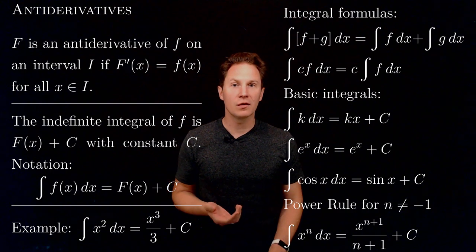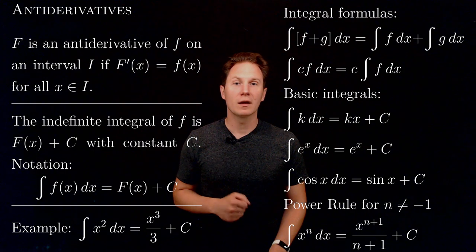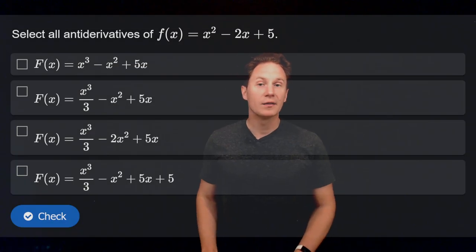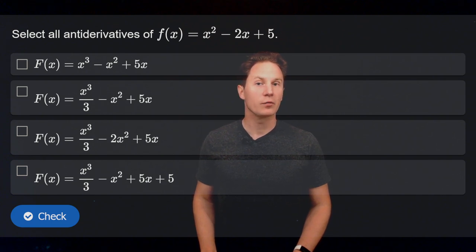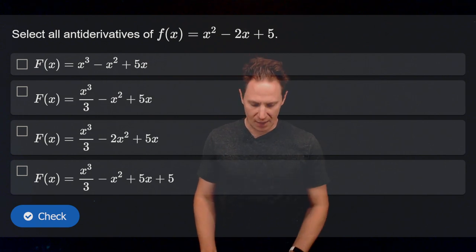Okay, this is enough for now — let's solve some problems involving antiderivatives. Select all antiderivatives of the function little f of x equals x squared minus 2x plus 5. Pause the video and make your selection now.